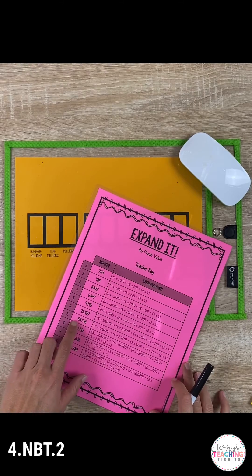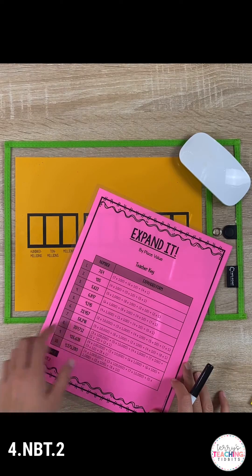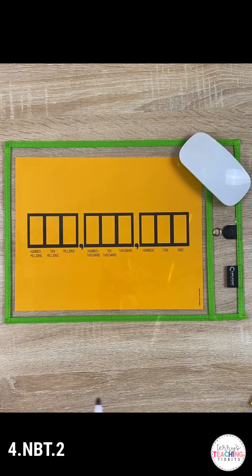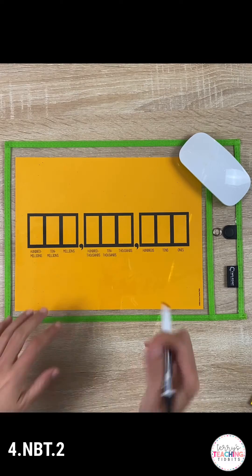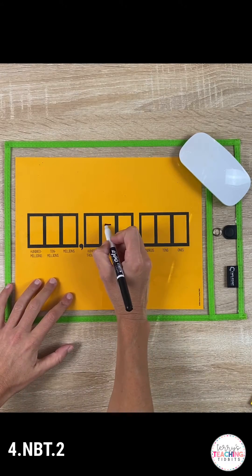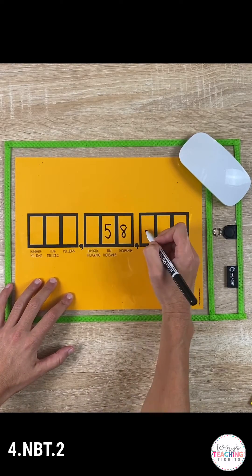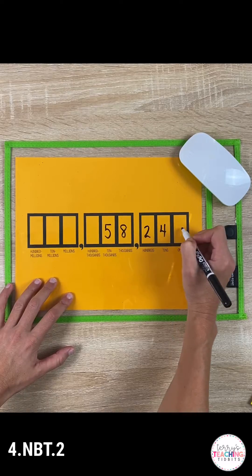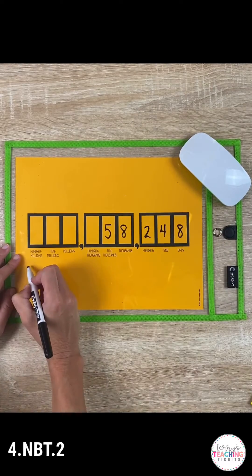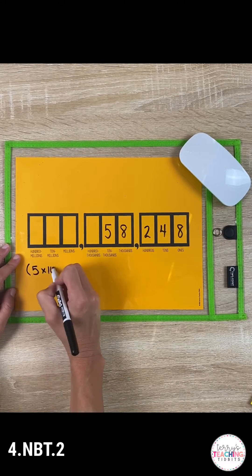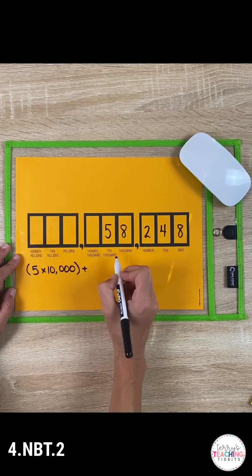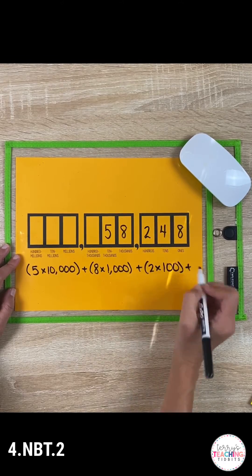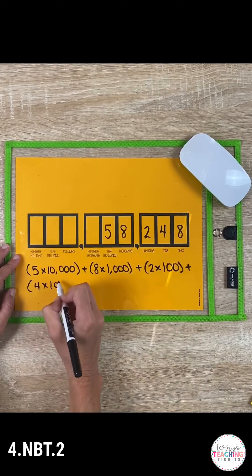In the next activity called Expand It, you're going to provide your students with the standard form of a number, either by displaying it for them or reading the number out loud and having them rewrite it on their place value chart. Once you've provided them with the standard form, have them rewrite the number in expanded form above or below the place value chart.